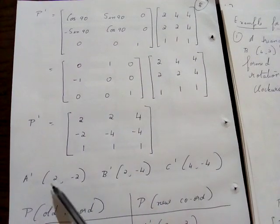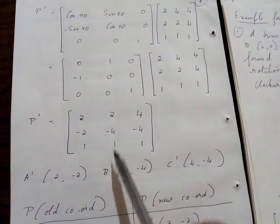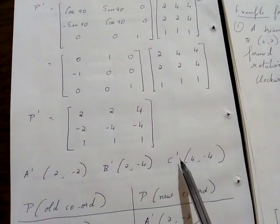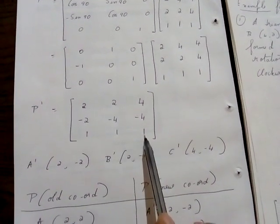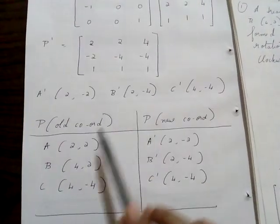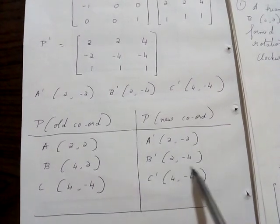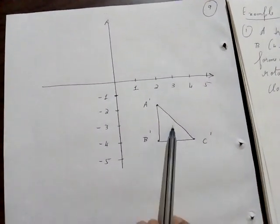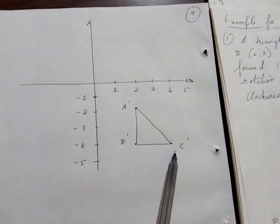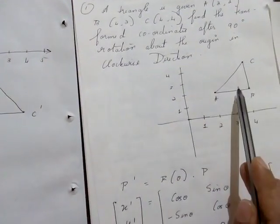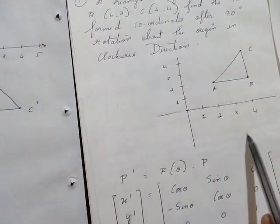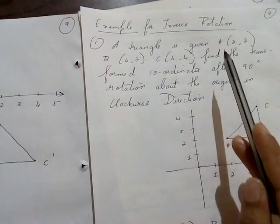From the resulting matrix, the first column gives A-dash, the second gives B-dash (2, minus 4), and the third gives C-dash (4, minus 4). The homogeneous coordinates in the last row are all ones. Plotting A-dash, B-dash, and C-dash, you can see the original triangle has rotated 90 degrees in the clockwise direction to a new position.